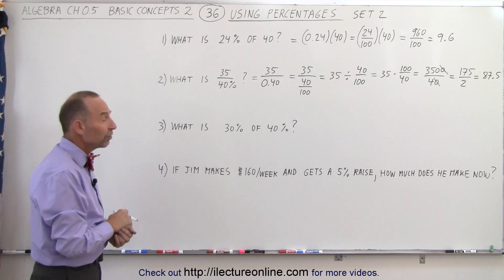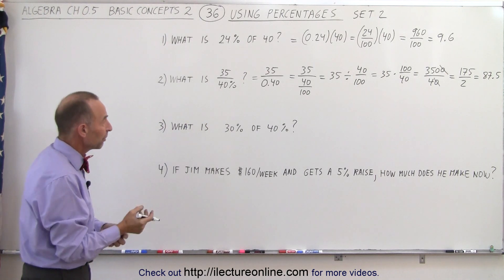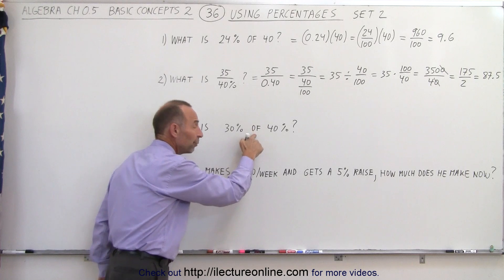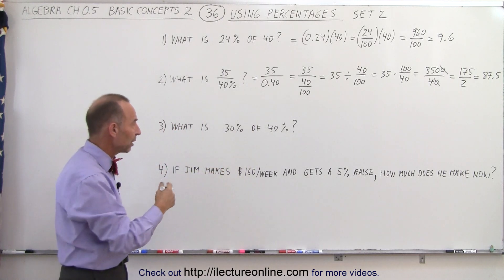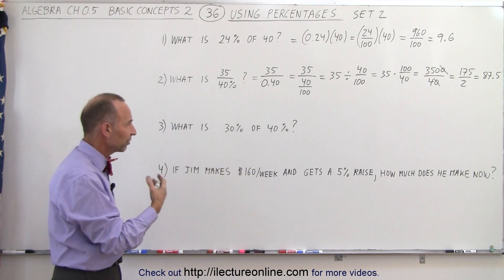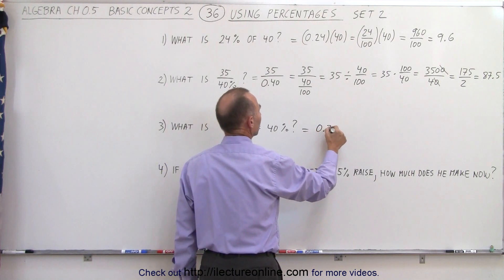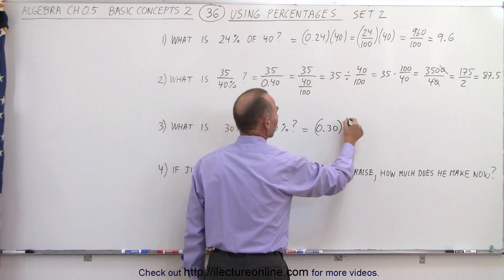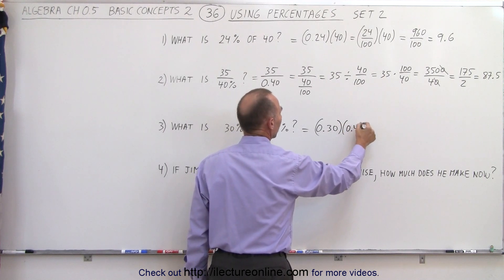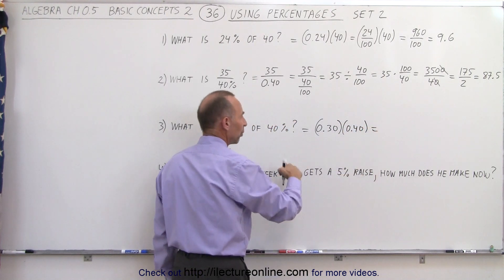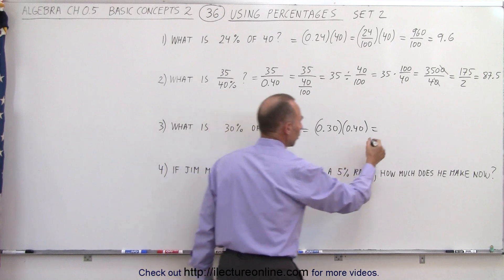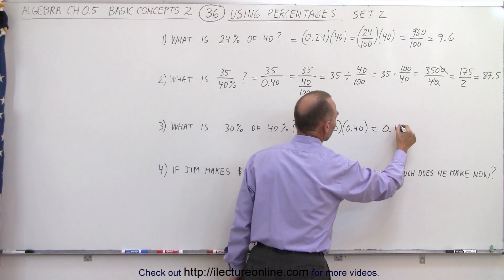The next one, it says, what is 30% of 40%? Again, when we see the word of, we know we need to multiply. And we can convert the 30% and the 40% to two decimals. So this can be written as 0.30 multiplied times 0.40. And so it would be 12 with two decimal places moved over. That would be 0.12.